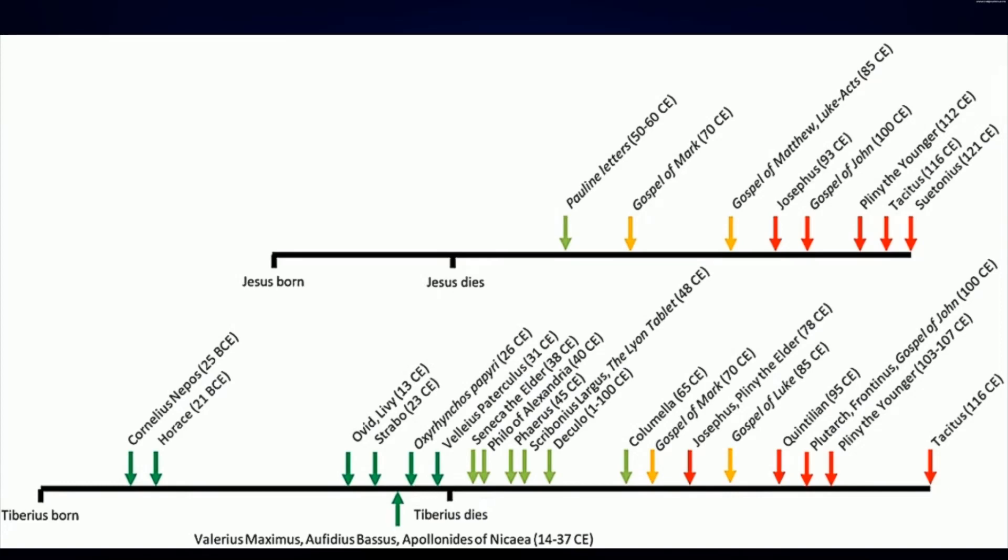I took a timeline of Jesus's life and the timeline of Tiberius and basically overlaid the dates of death because they didn't die the same year. Basically, everything that's dark green was written when the person was still alive.